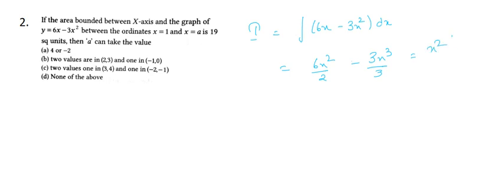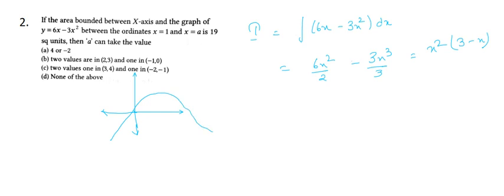Integrating, we get 6x²/2 - 3x³/3, which simplifies to x²(3 - x). Let's draw the curve. It is roughly symmetric, crossing the x-axis at 0 and 3. We mark points 1, 2, 3, and 4 on the x-axis and name the bounded areas A1, A2, and A3 corresponding to the intervals [1,2], [2,3], and [3,4].